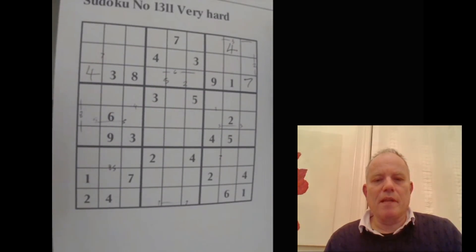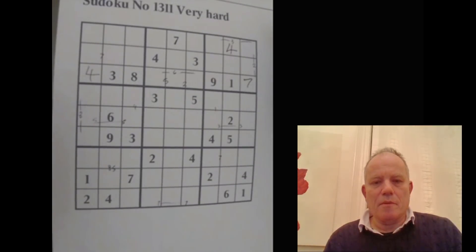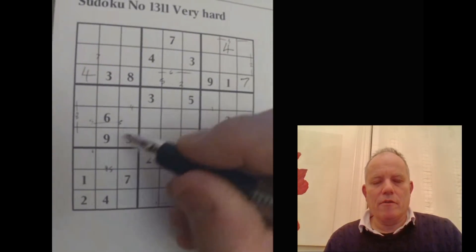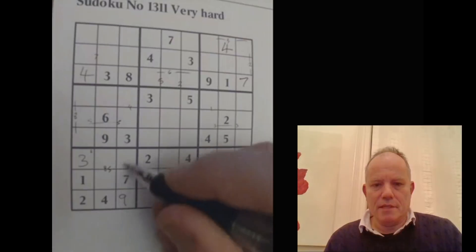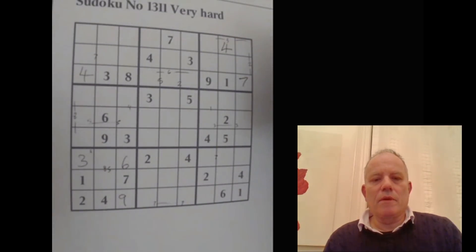So eight-five is a pair in that bottom left box, and that's really going to help with the numbers in the bottom left box. Three can now only go in that cell, as I've noticed. Nine and six complete that box down there.